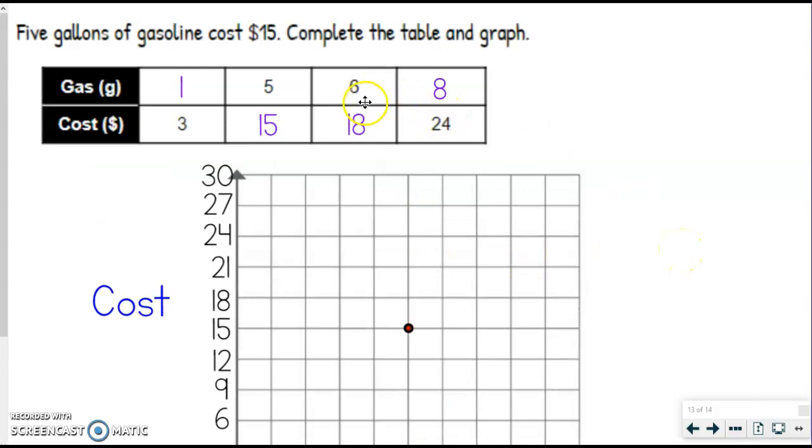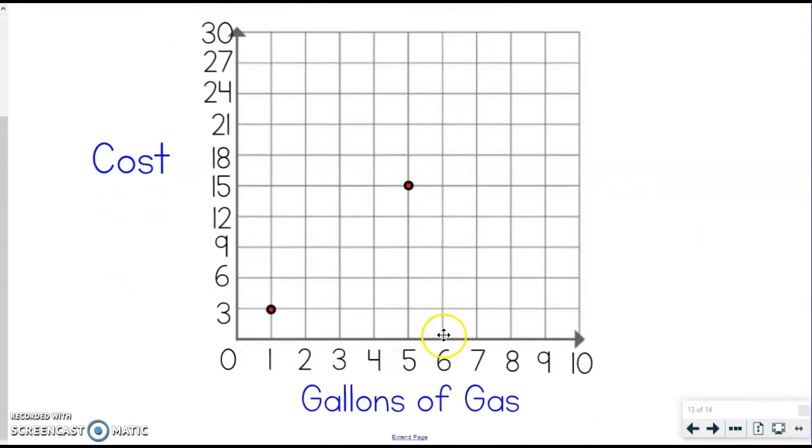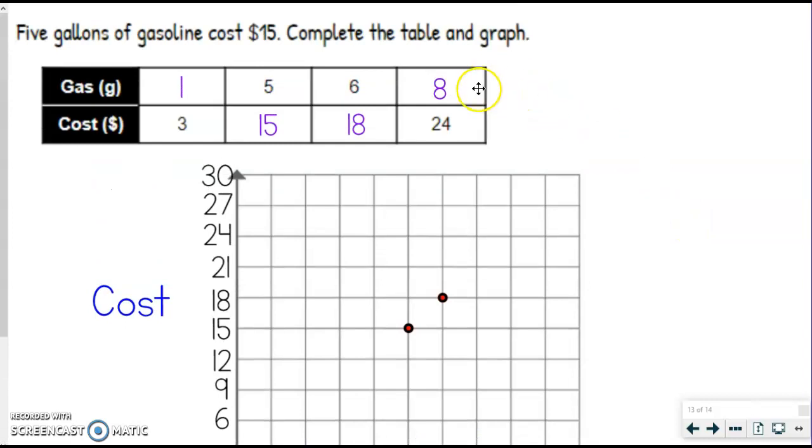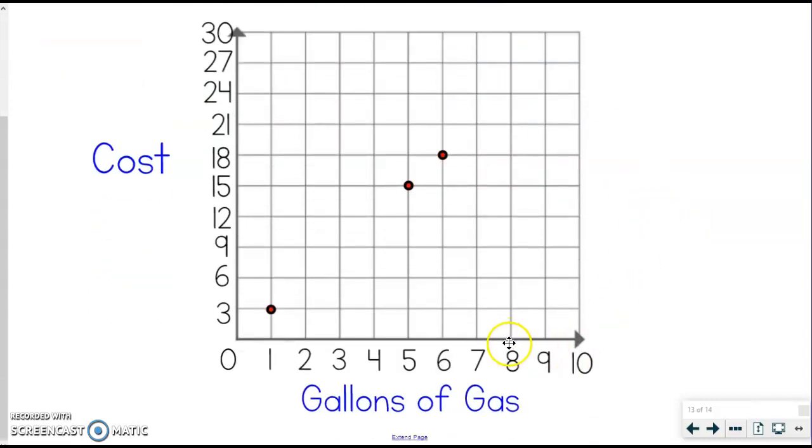Okay, we've got two more. We've got six and 18. So same idea. I'm going to go over to the six and then up to 18. So it's kind of near where my five and 15 was and apply my point right there. And last one is eight and 24. So I got to go over to eight, up to 24. So right here and mark my spot.